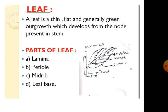Petiole, which is also known as the leaf stalk. It is the short, narrow and cylindrical part of the leaf that joins the lamina to the stem. Mid-rib: the petiole continues in the lamina as a thick vein in the middle, and that thick vein in the middle is called the mid-rib.